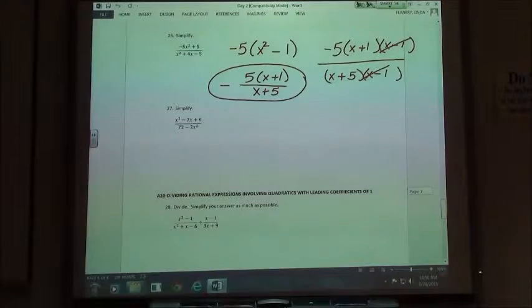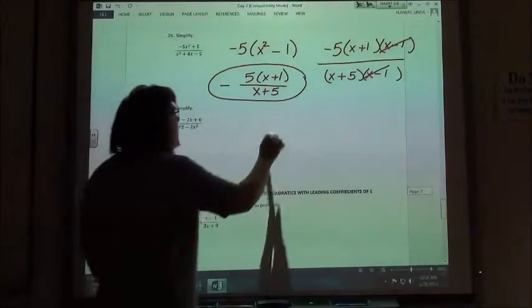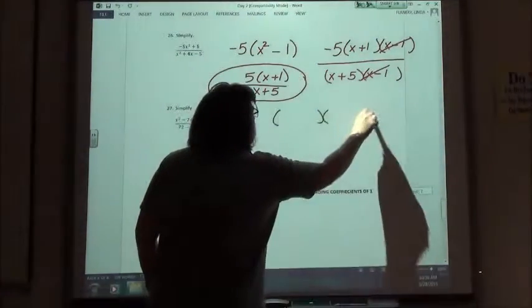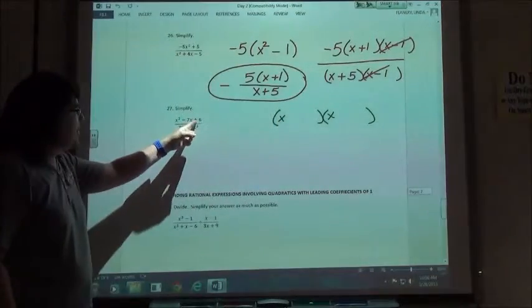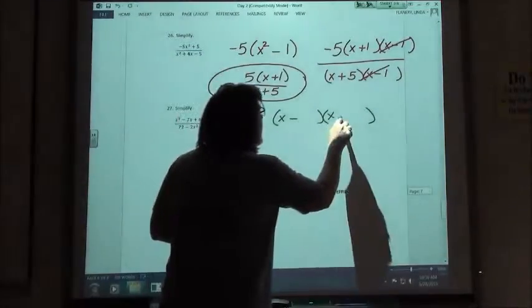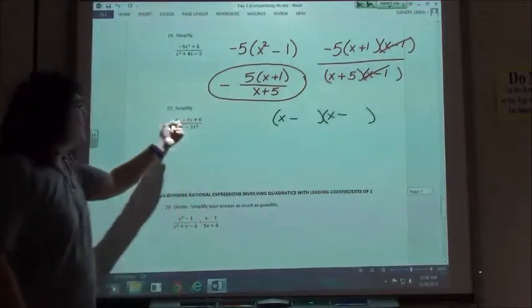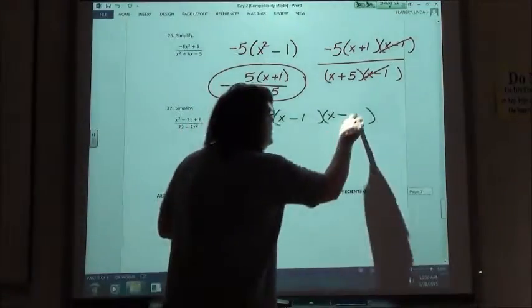27 then, if I want to simplify that one. If I look at the top, there isn't a greatest common factor, I'm just going to go ahead and go to my foiling. So x and x. The end is positive, so both sides are the same as the middle, a negative and a negative. Factors of 6 that add up to 7, well, 1 and 6.